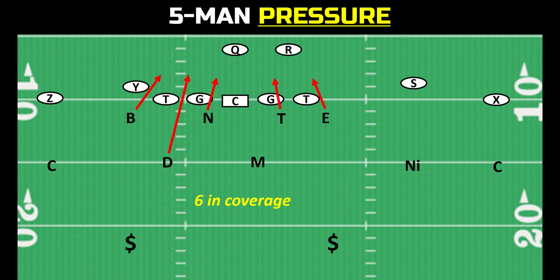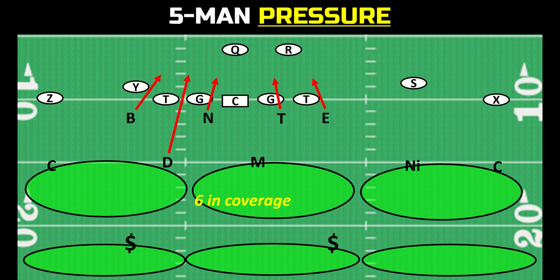When you have a five-man pressure with zone behind it, this is called a fire zone. Five are going — that's why it's called a pressure, someone is blitzing — and then you have six in coverage behind it. What you're looking at right now is technically a cover three fire zone because you have three deep, three under, five blitzing. You could also run a cover two fire zone — two deep, four under — or a cover four fire zone — four deep, two under.